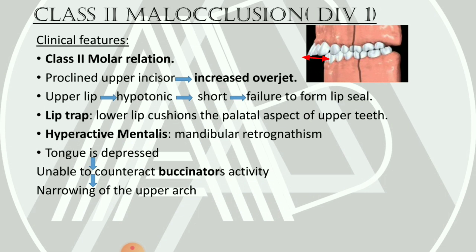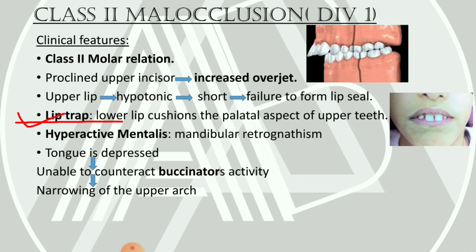Due to the proclined upper incisors, there is increased overjet. As a result of the proclined upper incisor, the upper lip becomes hypotonic and short, leading to failure of lip seal — this is called lip incompetency. Due to lip incompetency, the lower lip instead of contacting the upper lip contacts the palatal aspect of the upper teeth, and this phenomenon is called a lip trap.